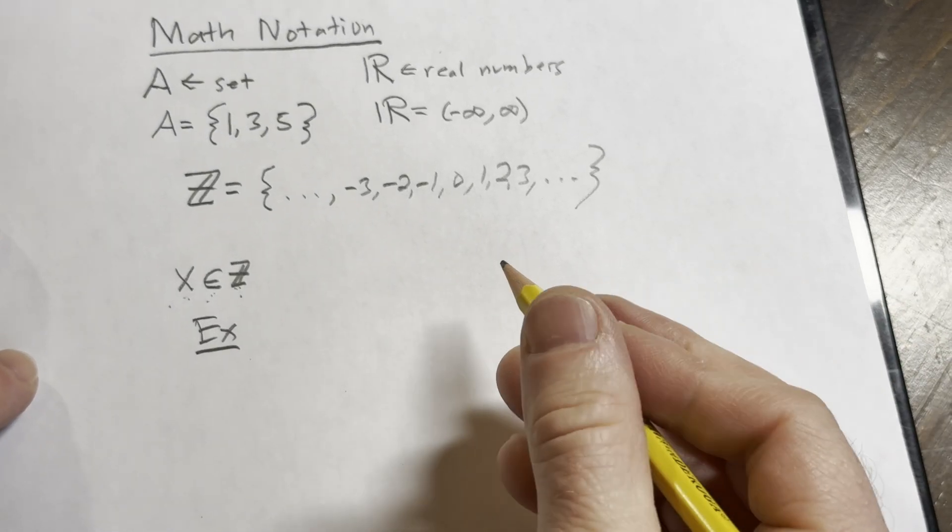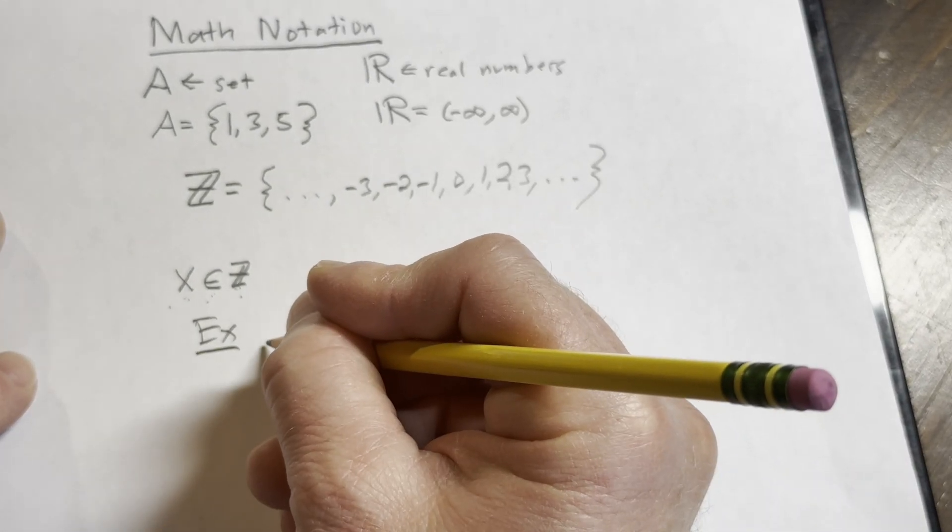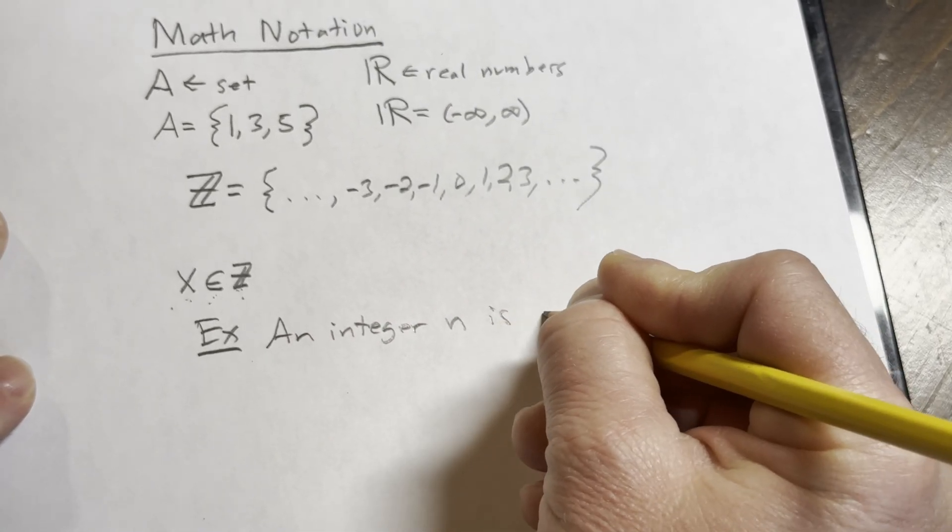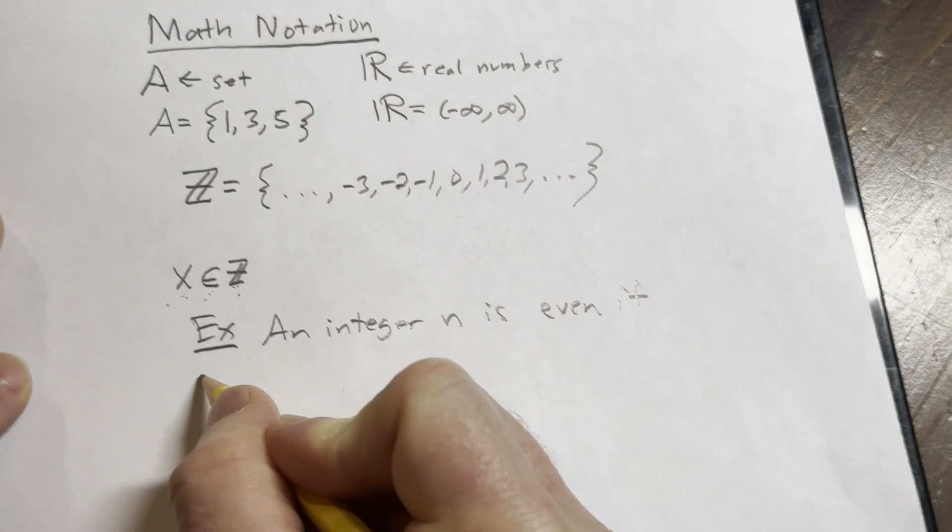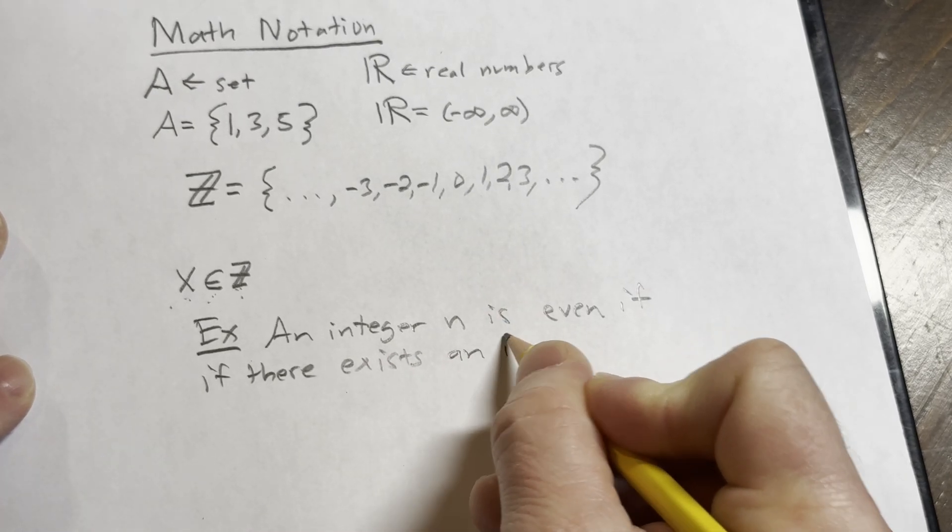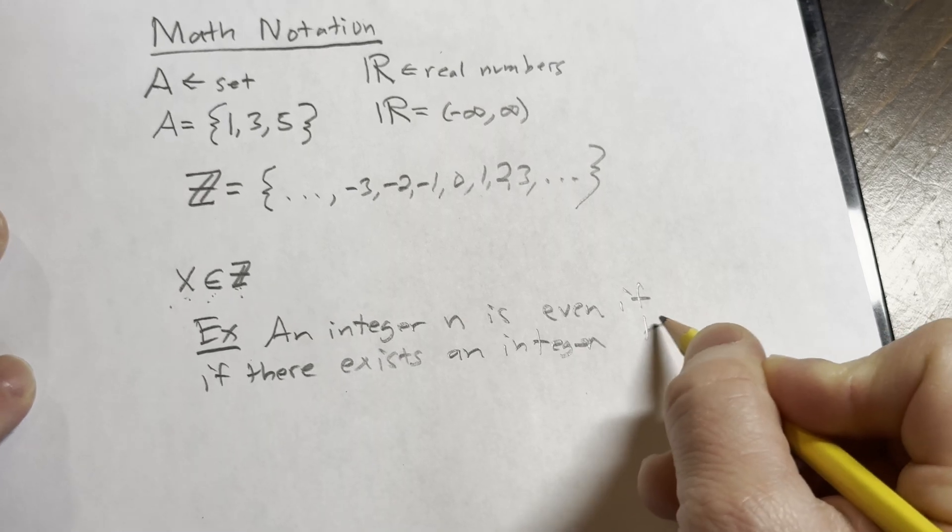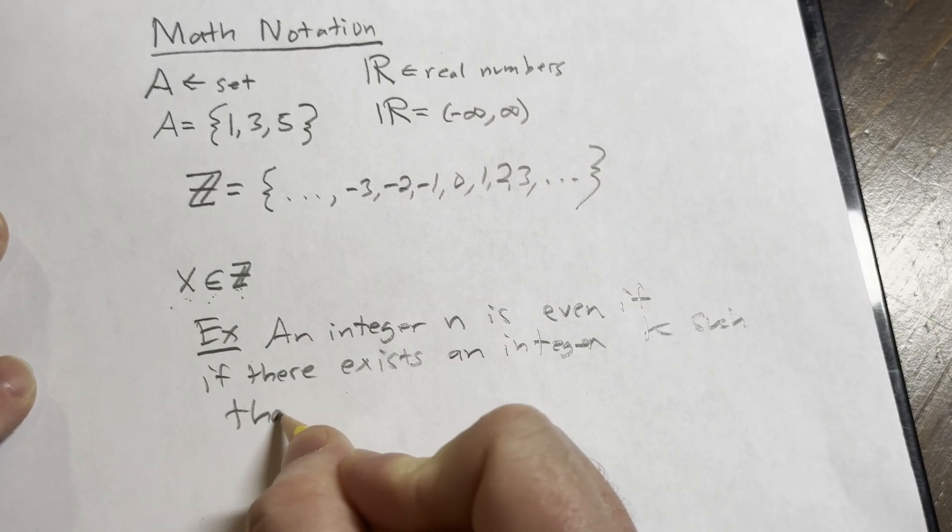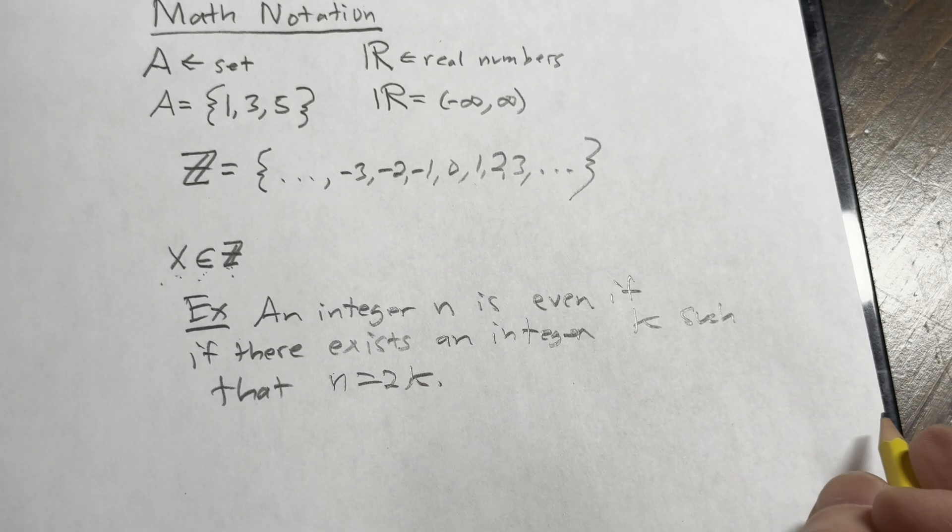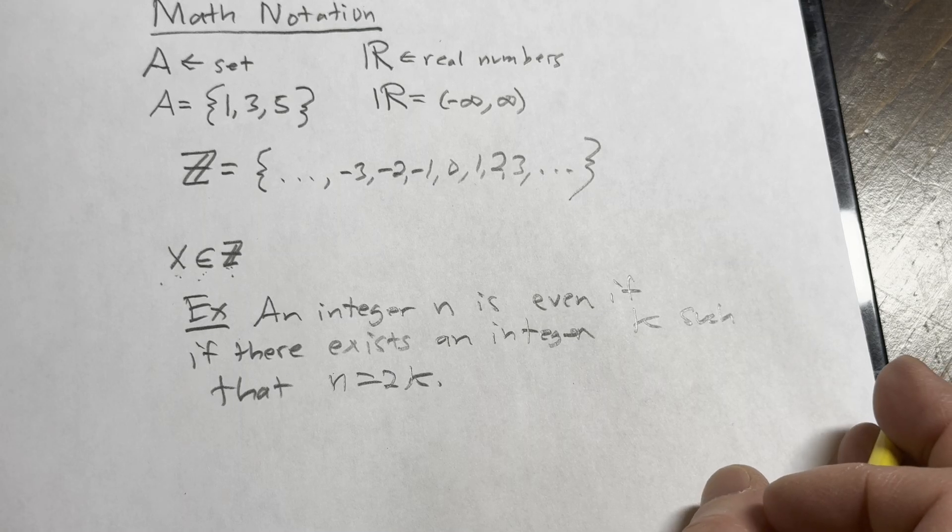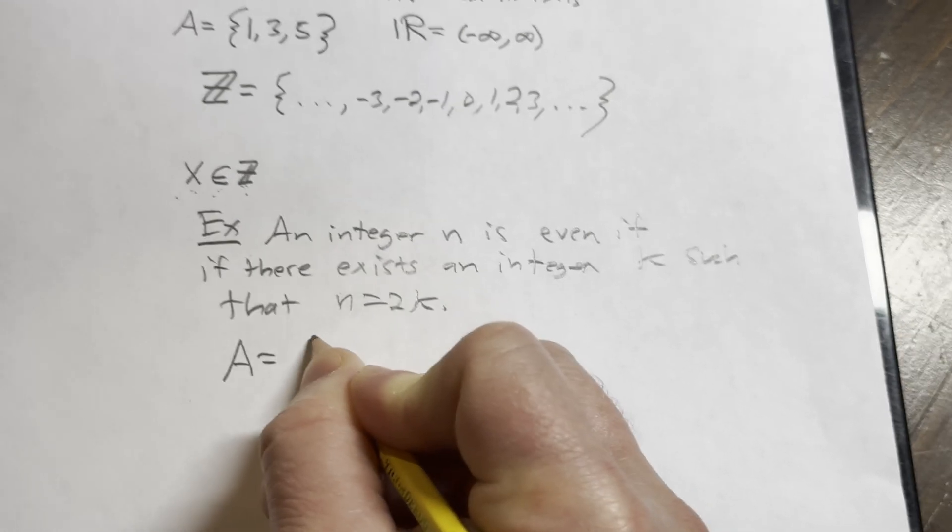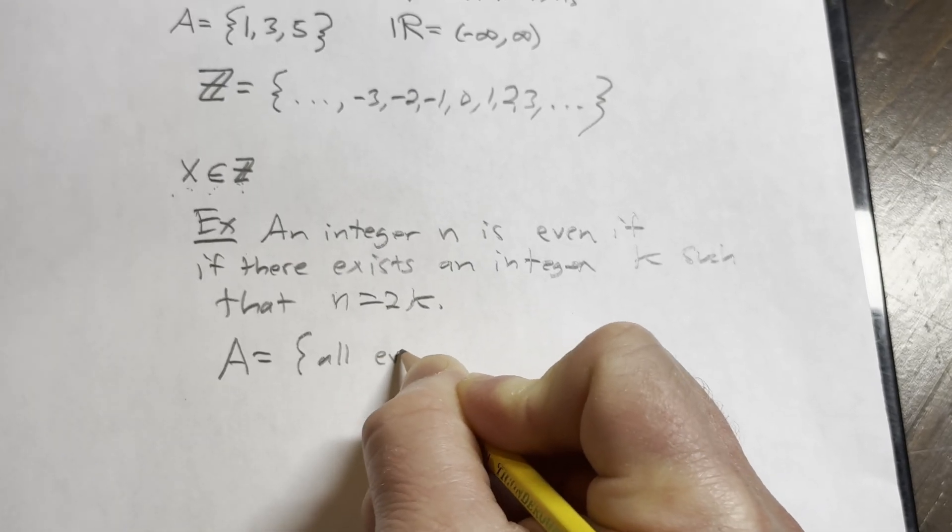So let's look at a definition. The definition is the following. We'll say an integer n is even if there exists an integer k such that n is equal to two times k. So if we can write it in that fashion it's going to be even. That's what it means for an integer to be even. Okay, so let's just say